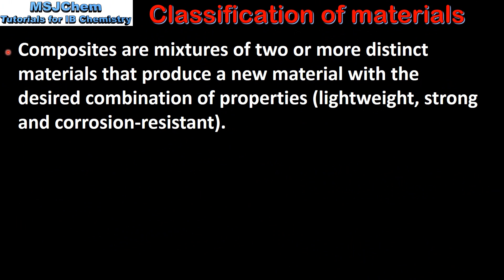Next we look at composites. Composites are mixtures of two or more distinct materials that produce a new material with the desired combination of properties. Examples of desired properties include being lightweight, strong and corrosion resistant.